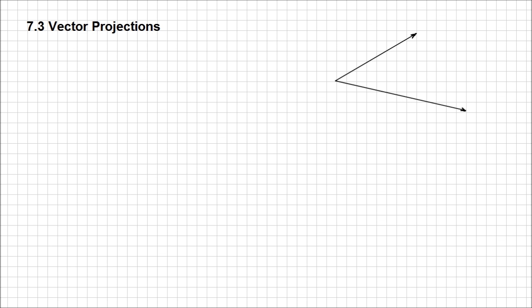Hello, in this lesson we're going to talk about vector projection. This concept we've already approached in the previous lesson when we talked about a dot product, and that's why I'm going to start exactly where we left off. So if we have two vectors in a tail-to-tail configuration forming an angle theta, we can determine theta using the dot product definition rearranged: cosine theta equals the dot product of a and b over the product of their magnitudes. This isn't a formula to memorize, just important to know you can use the dot product definition to find the angle between two vectors.